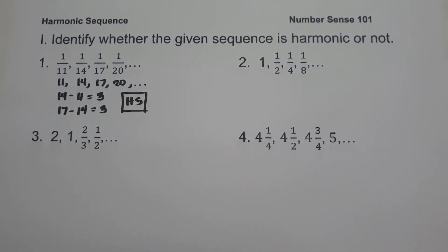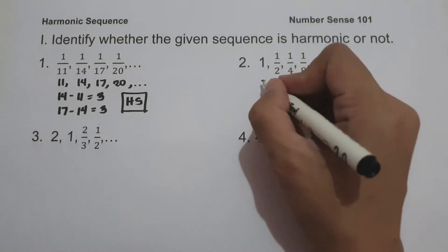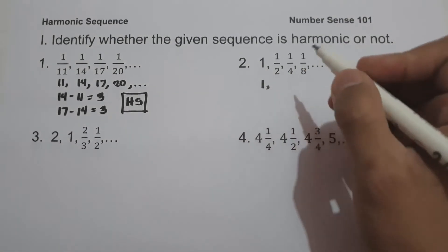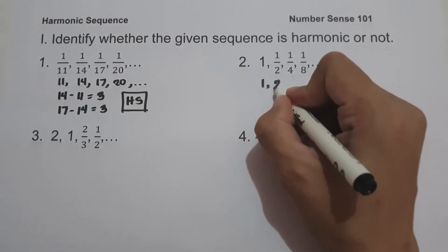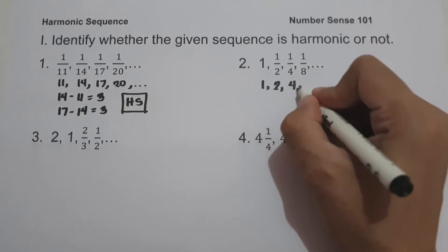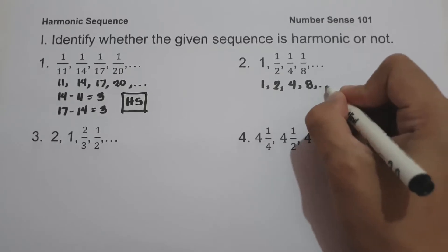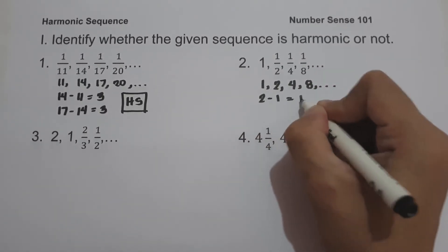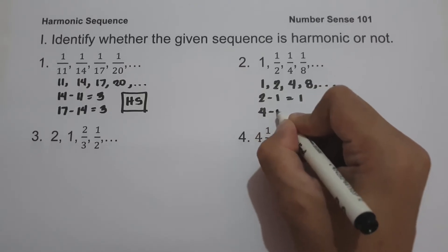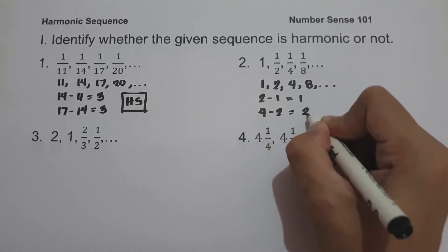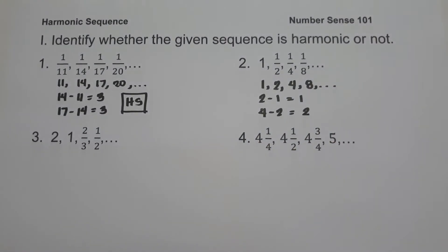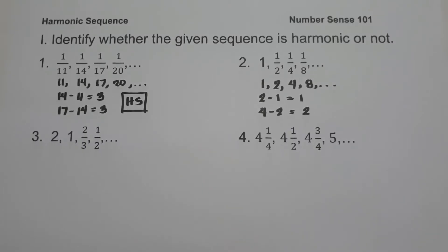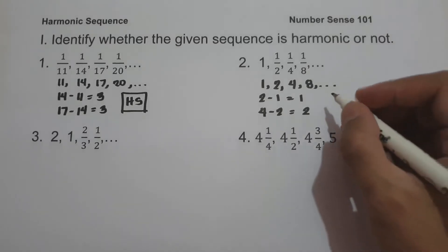On number 2, we have 1, 1/2, 1/4, 1/8. The reciprocals are 1, 2, 4, 8. The differences are: 2 minus 1 equals 1, and 4 minus 2 equals 2. Since we don't have a common difference, the sequence on number 2 is not an example of a harmonic sequence.